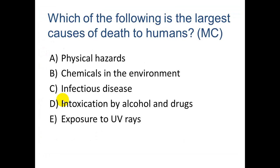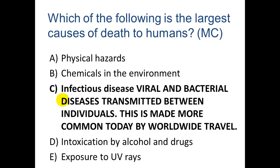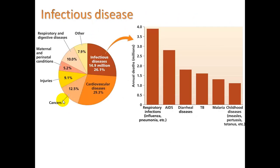Which of the following is the largest cause of death to humans? If you said infectious diseases, that's correct — we're talking about viral and bacterial diseases transmitted between individuals, made more common today by worldwide travel. Over a quarter of deaths are caused by cardiovascular disease — heart disease — usually from bad diet, not enough exercise, smoking, or too much stress.